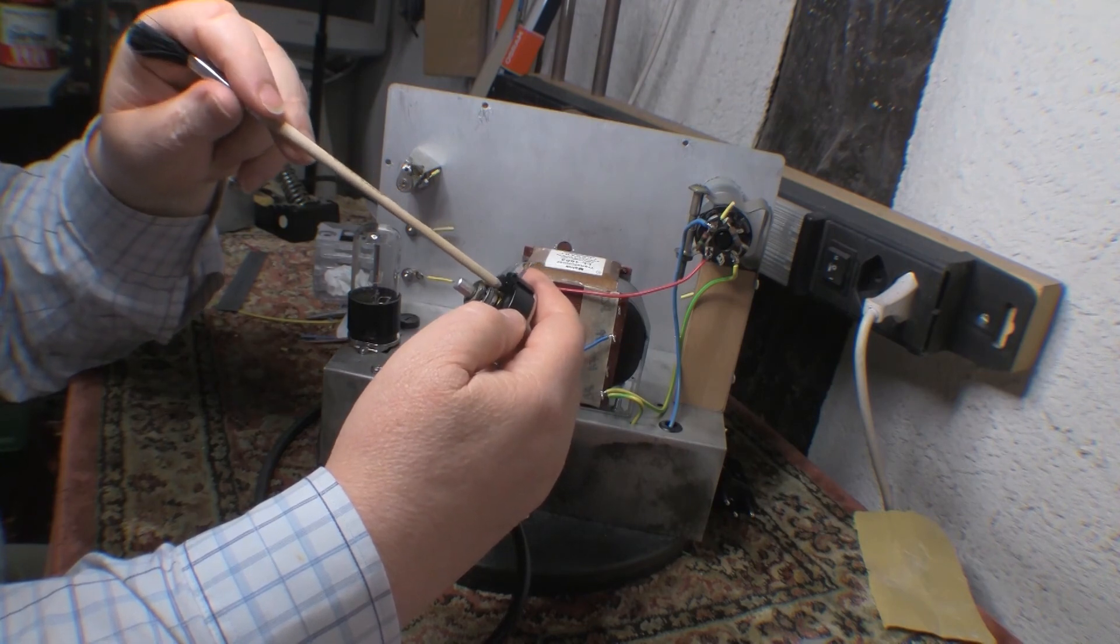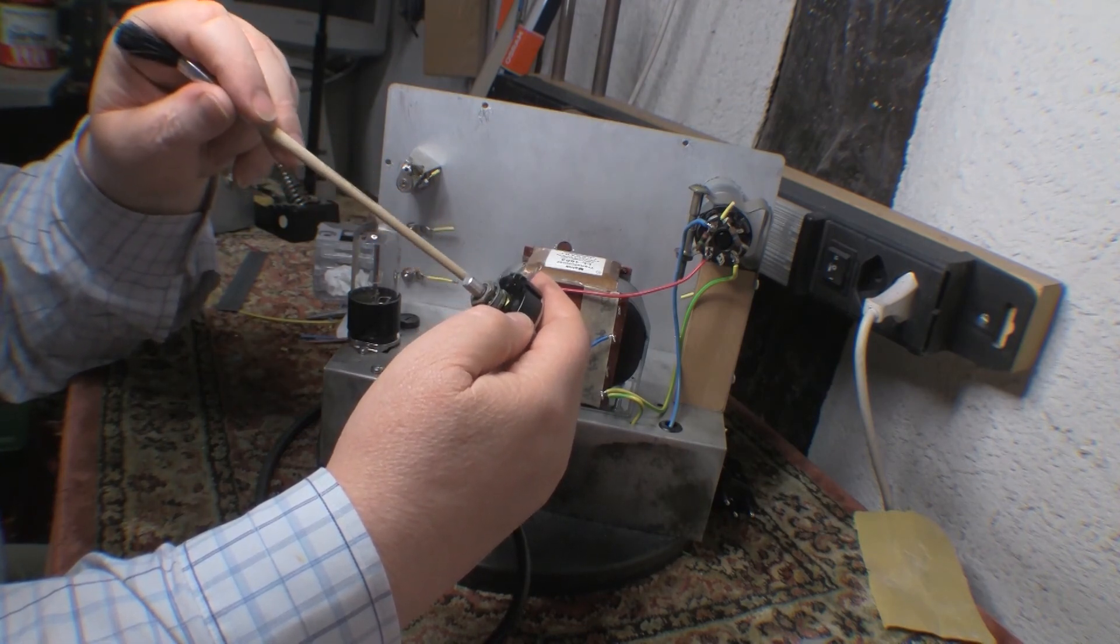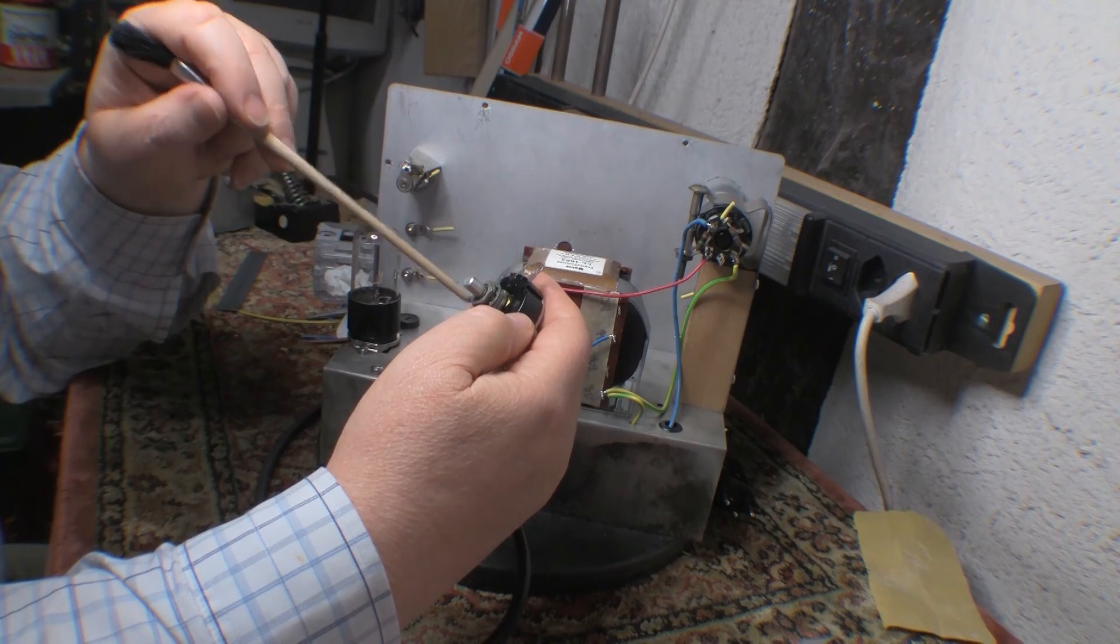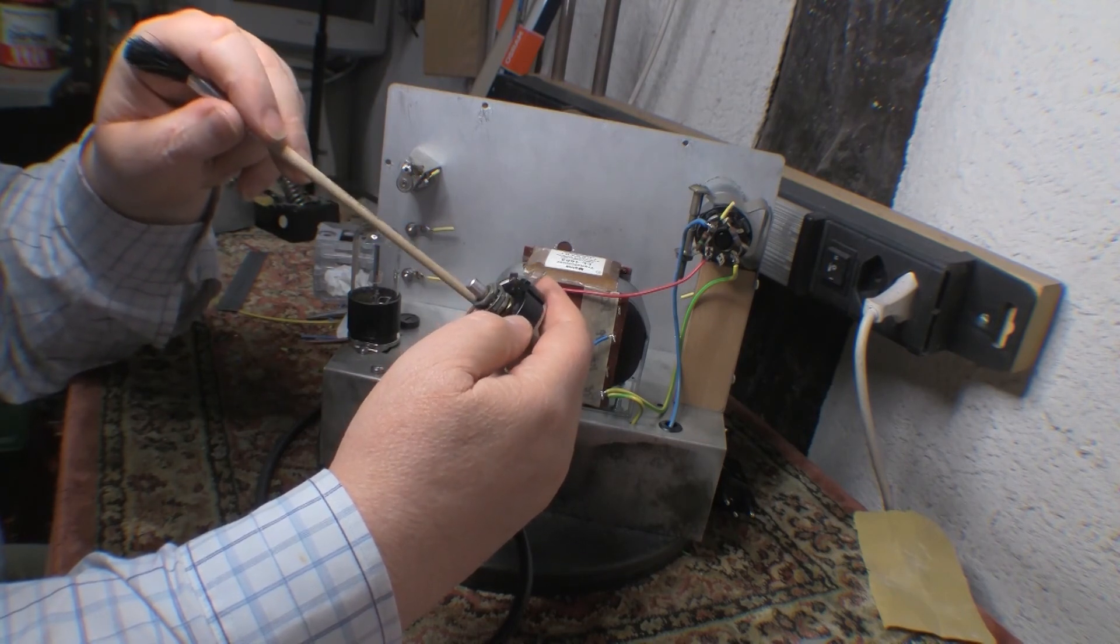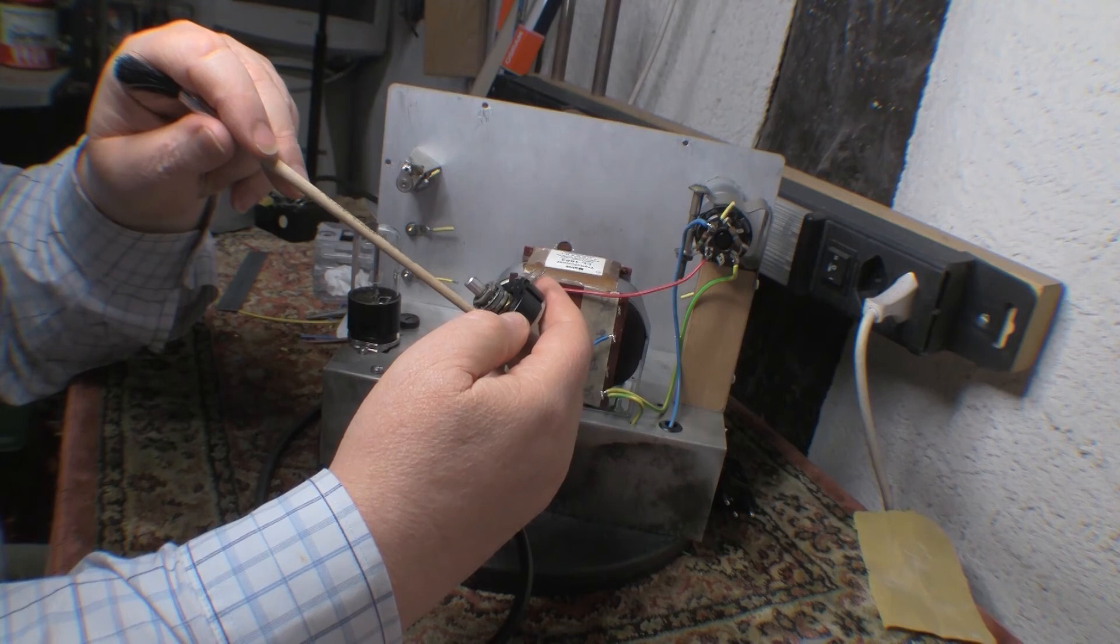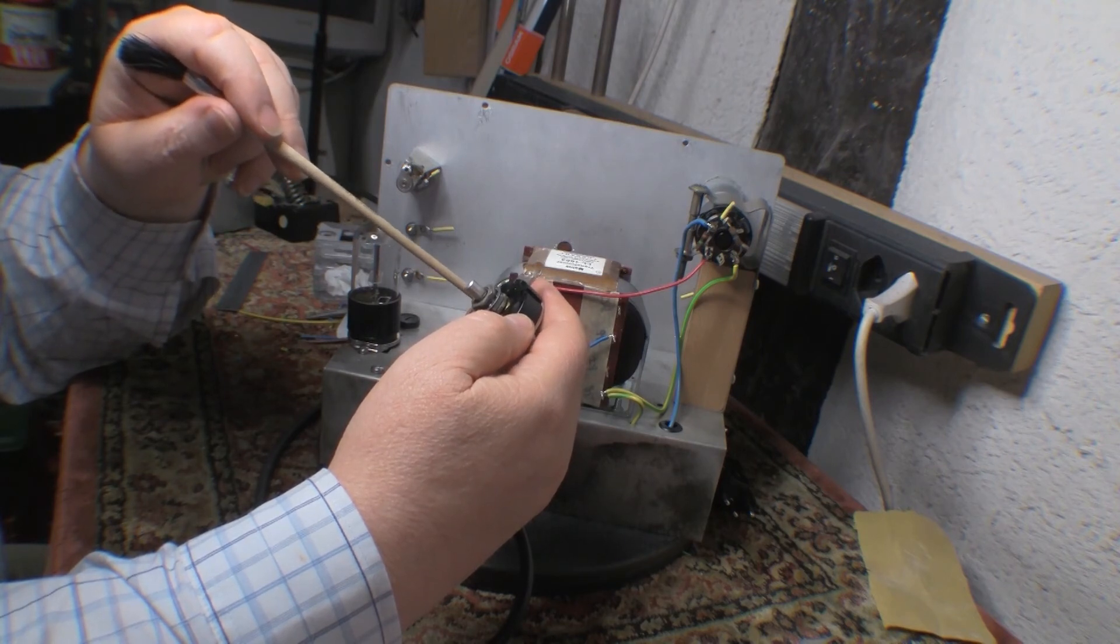So the resistance wire has sort of tended to bunch up in places, and then there's gaps in other places. And so as the wiper comes around, it encounters these little areas along the travel where it's not actually touching any of the wire.